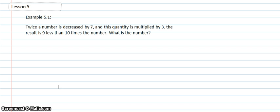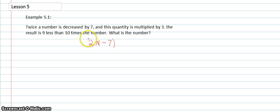So first we're just going to read through the problem: 'Twice a number is decreased by 7, and this quantity is multiplied by 3.' Twice a number would be 2 times the number — I'll use n — decreased by 7, so minus 7. And this quantity is multiplied by 3, so I put that in parentheses because it's talking about the whole quantity, and I'll put the 3 on the outside.